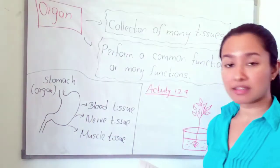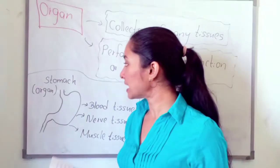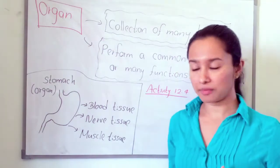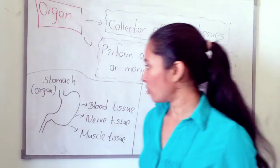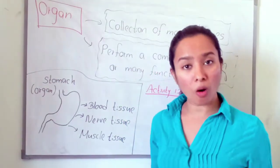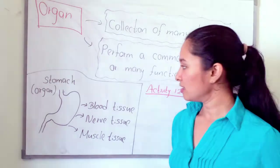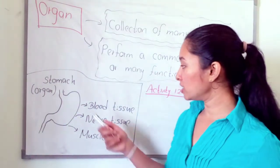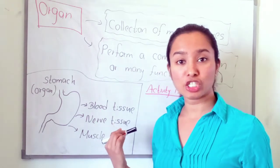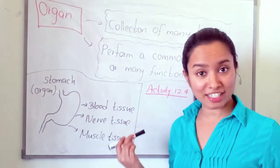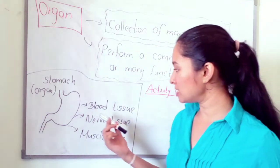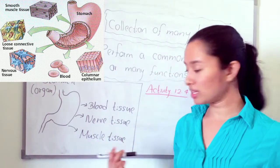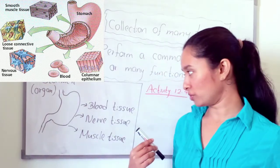For example, we can take the stomach. The stomach is an organ in our body. This stomach is made up of different types of tissues — for example, blood tissue, nerve tissue, and muscle tissue.